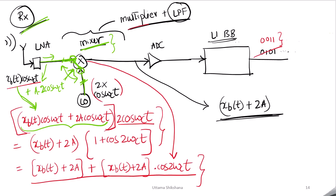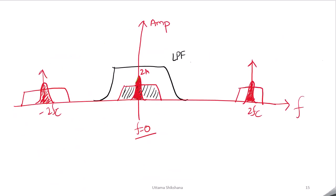Now we enter the second point: how is the unwanted DC introduced in the baseband? This signal goes through the multiplier first and is multiplied with 2·cos(ω_c t) generated by the local oscillator. If you simplify this equation, you get the final output of the multiplier. Looking at the spectrum, at DC we have an unwanted DC component, and at ±2f_c we have high-frequency components. With a low-pass filter we can eliminate the high-frequency components, but we will not be able to eliminate the unwanted DC component at the baseband.